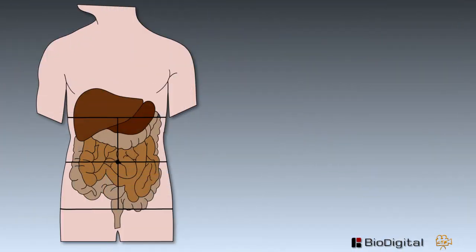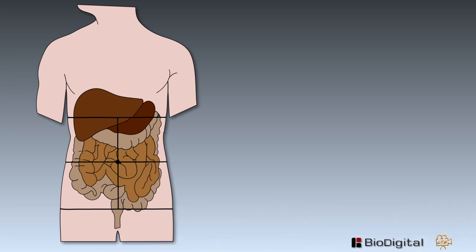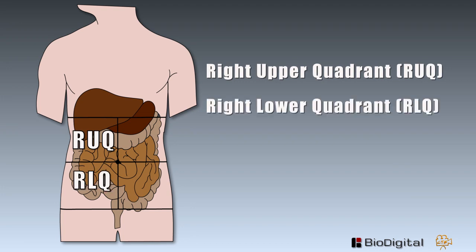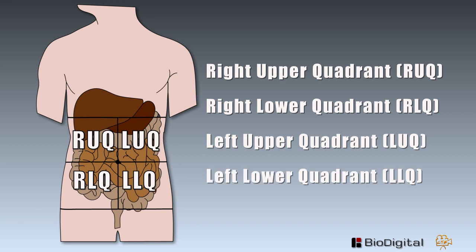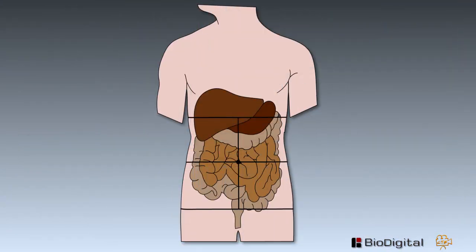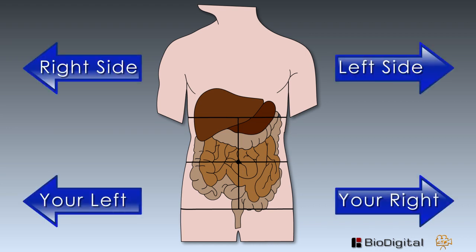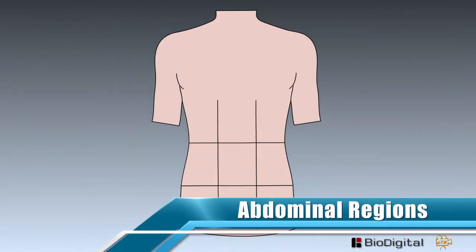Next, we'll take a look at the four quadrants. The main purpose is to divide the abdominal cavity into four sections. They are known as the right upper quadrant, right lower quadrant, left upper, and left lower. It's important to know how right and left of the body is identified when looking at a diagram. Right and left are mirror reflections — it's not your right or left, it's the right and left of the body that you're looking at.